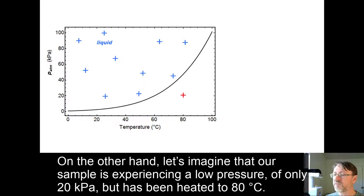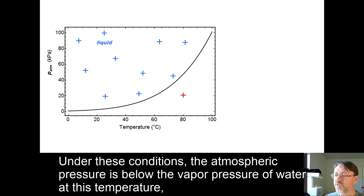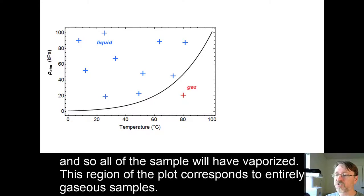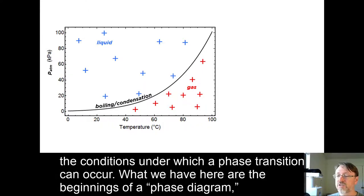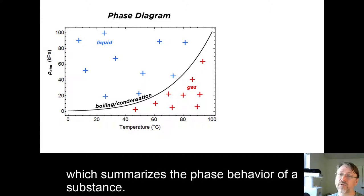On the other hand, let's imagine that our sample is experiencing a low pressure of only 20 kilopascals, but has been heated to 80 degrees C. Under these conditions, the atmospheric pressure is below the vapor pressure of water at this temperature, and so all of the sample will have vaporized. This region of the plot corresponds entirely to gaseous samples. The line itself, where the atmospheric pressure is the same as the vapor pressure of the liquid, corresponds to boiling or condensation, the conditions under which a phase transition can occur. What we have here are the beginnings of a phase diagram, which summarizes the phase behavior of a substance.